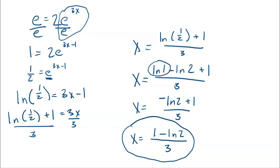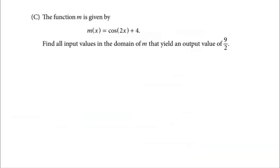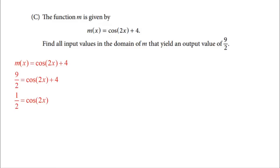Part C gives M of X equals cosine of two X plus four, and asks for all input values in the domain of M that yield an output of nine halves. Setting M of X equal to nine halves and solving: subtract four from both sides — nine halves minus four equals nine halves minus eight halves, which equals one half. So cosine of two X equals one half.